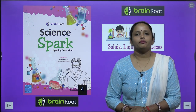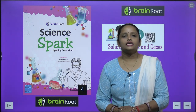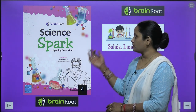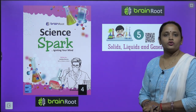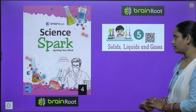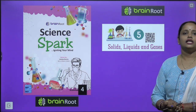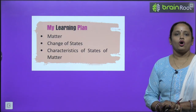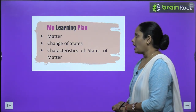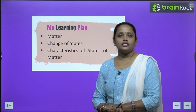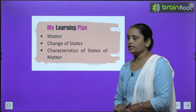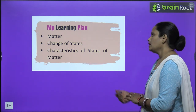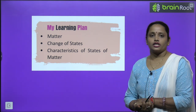Hello my dear kids, welcome back. I am Vandana and you are learning Science of Class 4 by Brain Root Series, and here is the book Science Spark. Today we are going to start with Chapter number 5 and the name is Solids, Liquids and Gases. We are going to learn about all these three — these are matter — and we will learn about matter, changes of states, and the characteristics of states of matter.